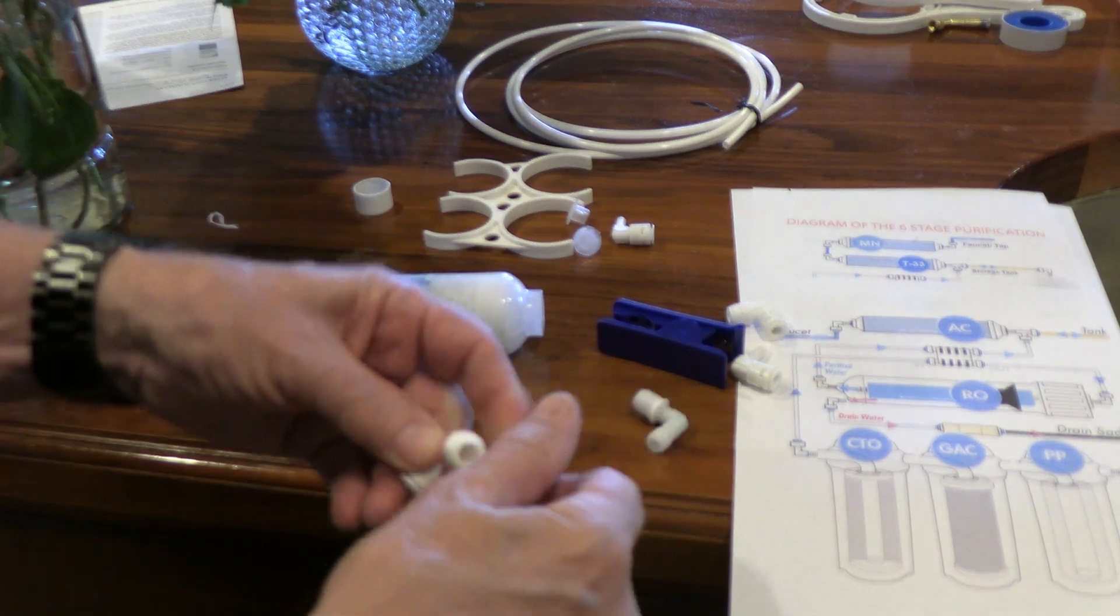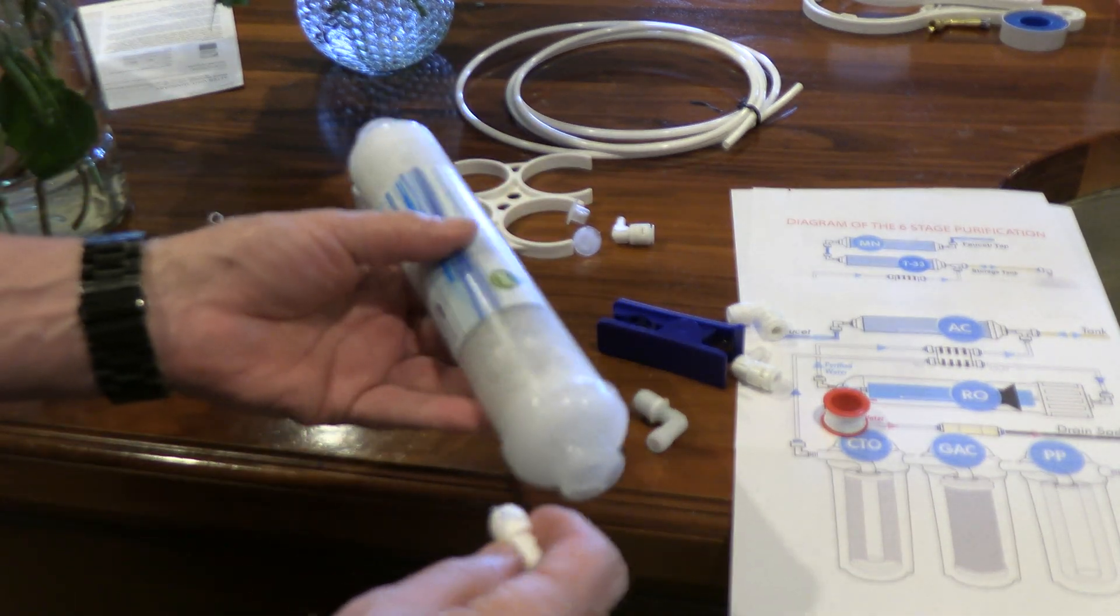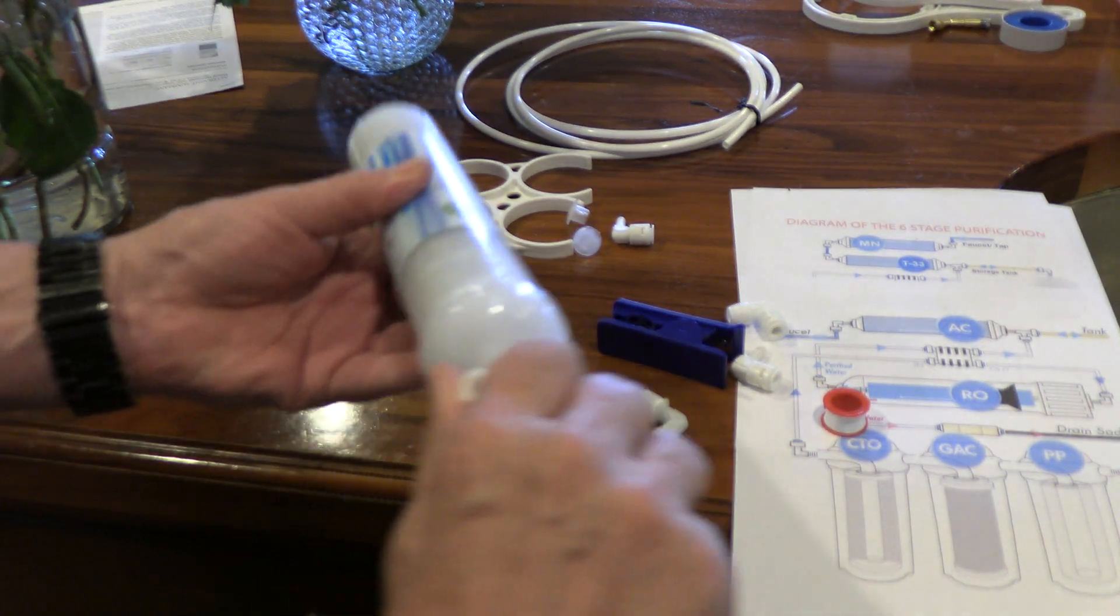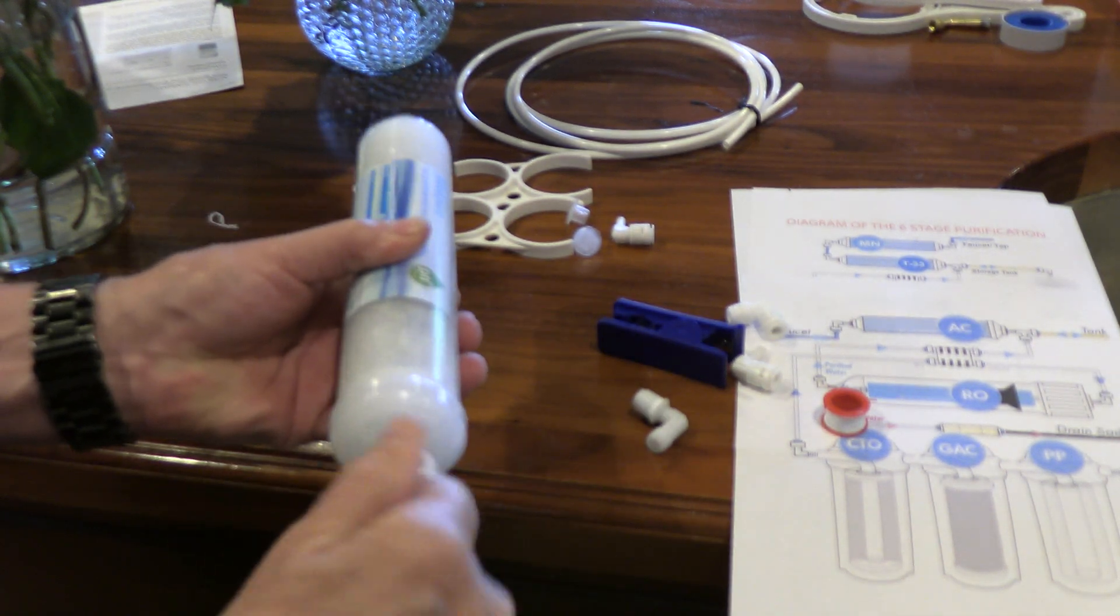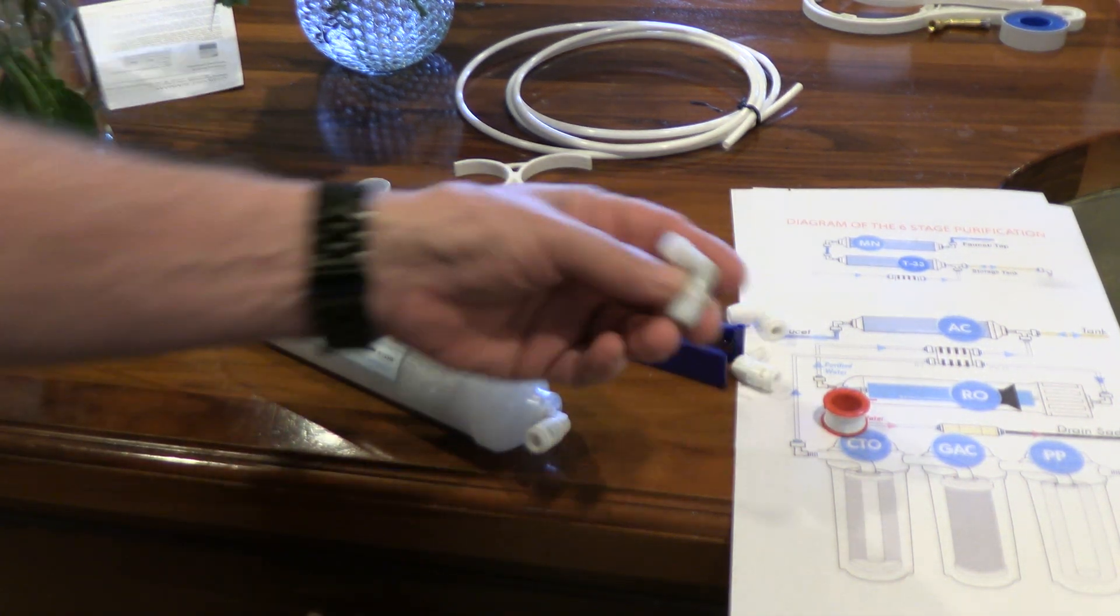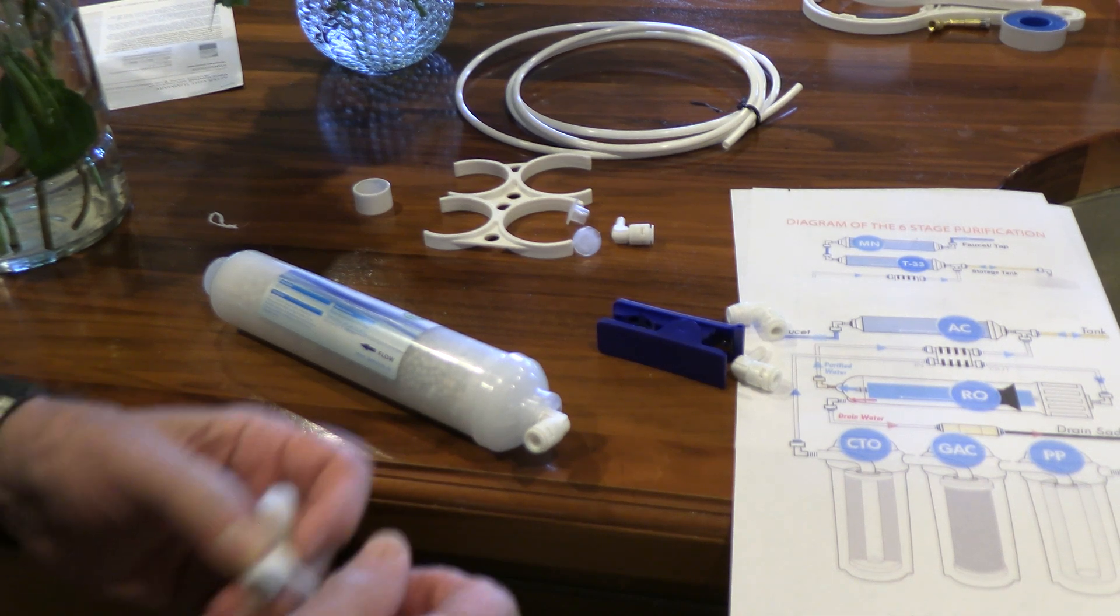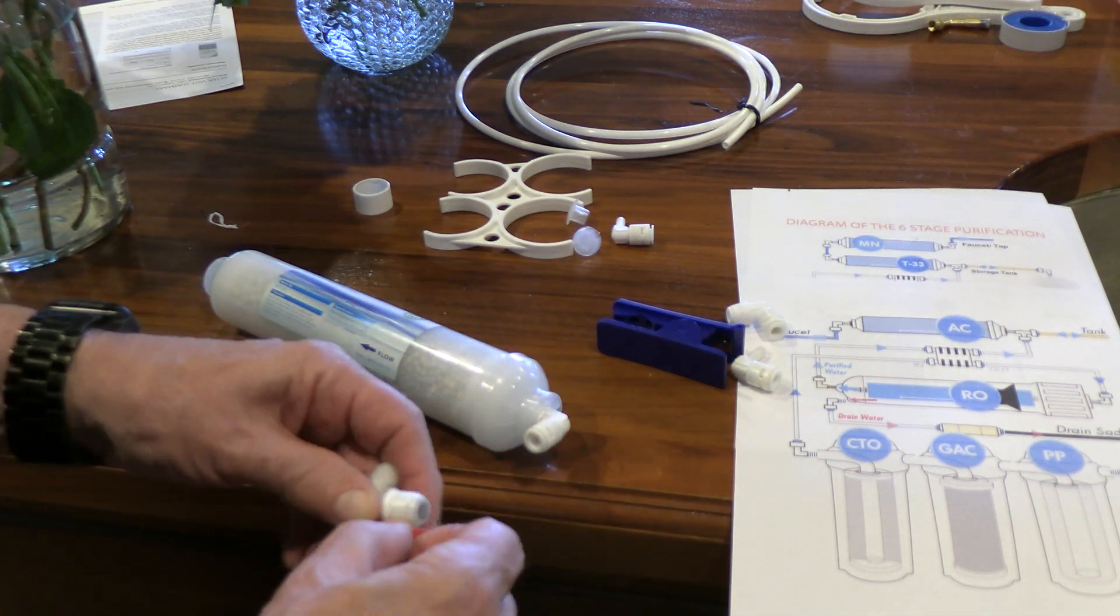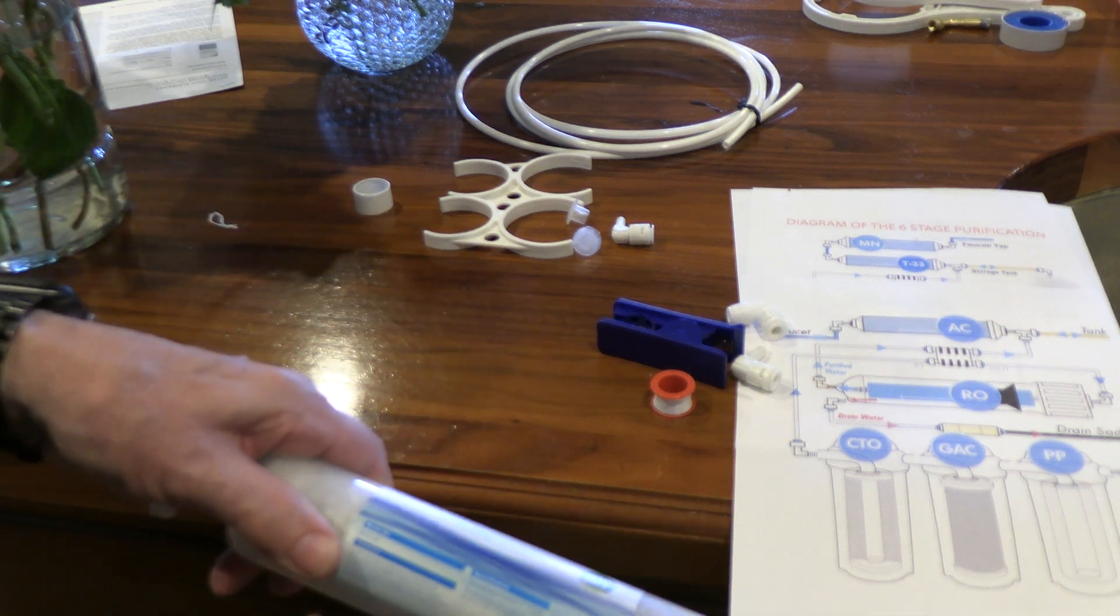I'm going to put some Teflon tape around the connections. This is going to be the water in. There you go. And then the one we just took out, we'll put some Teflon tape on it. And this will be the water leaving the RO. And again, you can tell because of the flow, in, out.